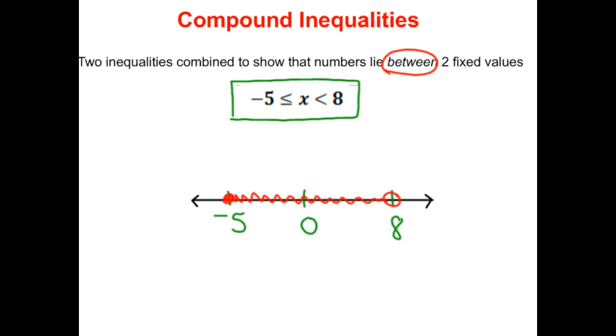So you can think of it really as two inequalities put together. We have -5 ≤ x, and we have x < 8. And instead of solving them separately, we're going to solve them together and look at the solution to both at the same time.